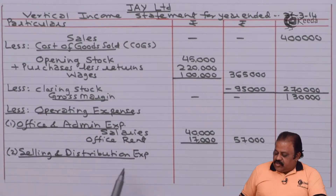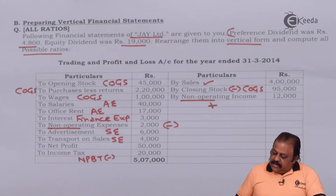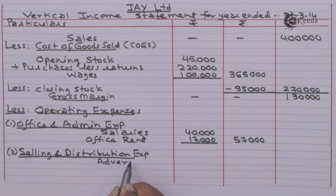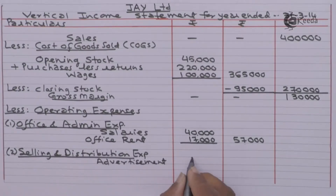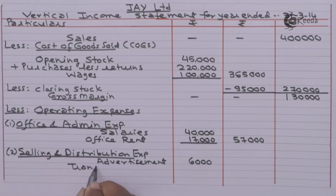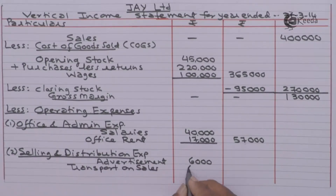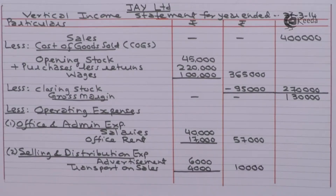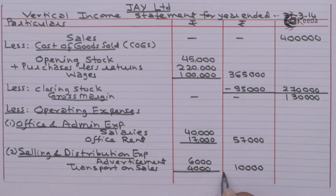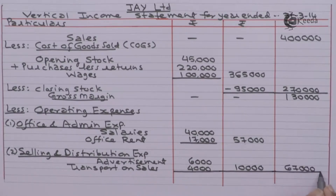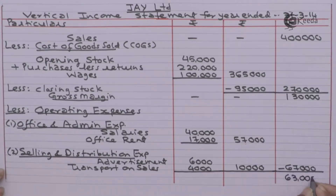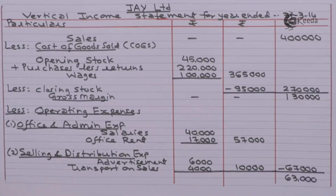Next, selling and distribution expenses: advertisement 6,000 and transport on sales 4,000, giving total selling expenses of 10,000. Total operating expenses are 57,000 plus 10,000 equals 67,000. Deducting these from gross margin of 1,30,000 gives operating net profit of 63,000.